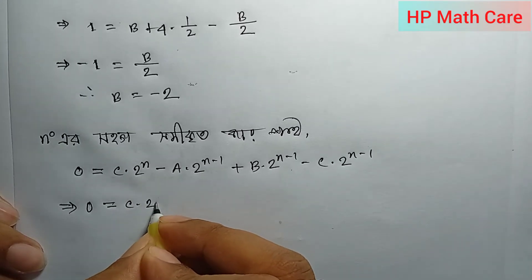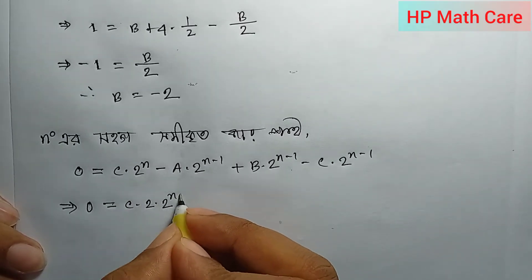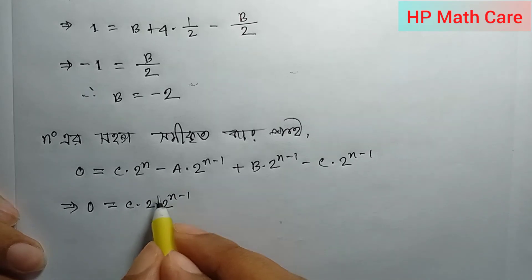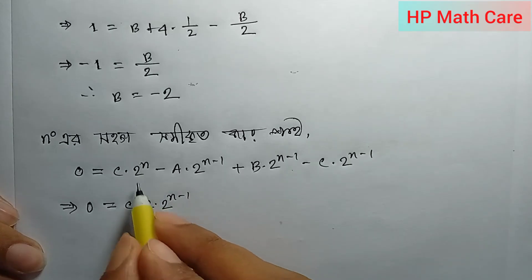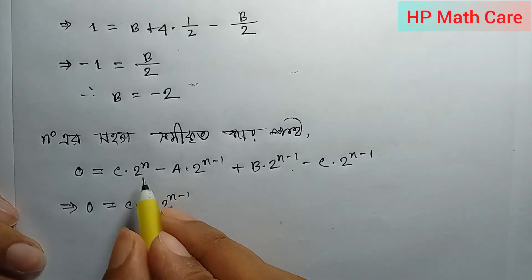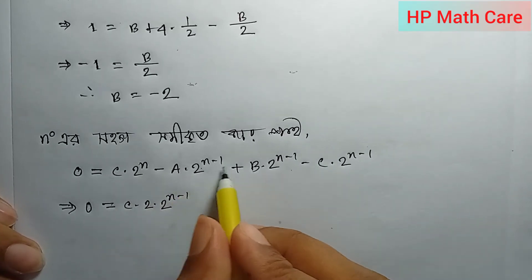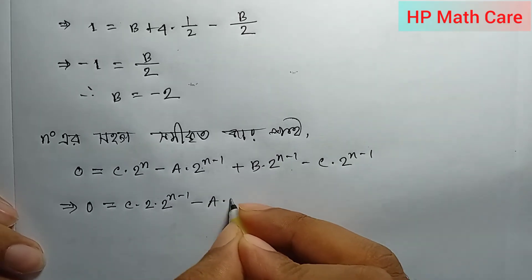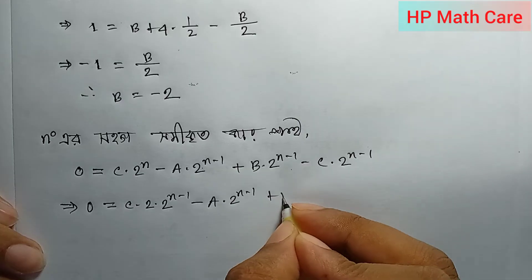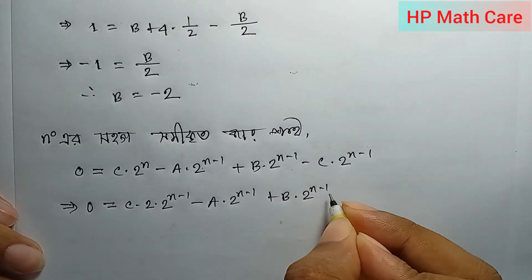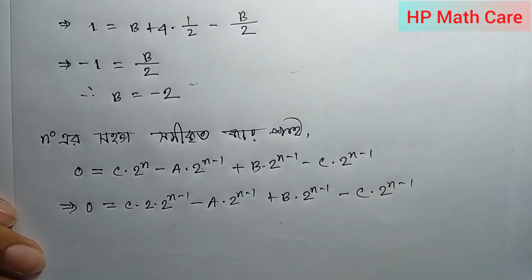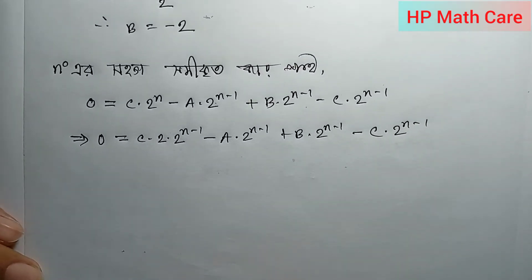But if you don't have 2, you can add 1 plus n minus 1, then plus 1 minus 1, then 2 power n is equal to n. So let's see how much we can see. Let's add 2 power n minus 1, so we can add a into 2 power n minus 1, plus b into 2 power n minus 1, minus c into 2 power n minus 1.